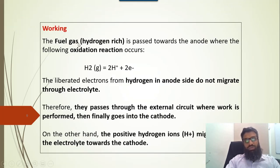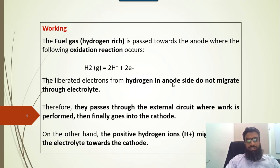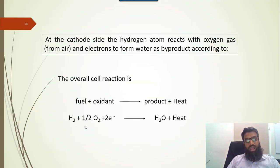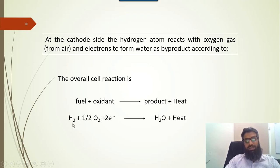The fuel gas hydrogen is passed toward the anode where the following oxidation reaction occurs: H2 is converted into 2H+ plus 2 electrons. The liberated electrons from hydrogen on the anode side do not migrate through the electrolyte — the free electrons pass through the external circuit where work is performed and finally go into the cathode. On the other hand, the positive side of the hydrogen will migrate through the electrolyte to the cathode. At the cathode side, the hydrogen atom reacts with oxygen and electrons to form water as a by-product. According to the chemical reaction, the complete equation is: H2 + half O2 + 2 electrons = H2O + heat.